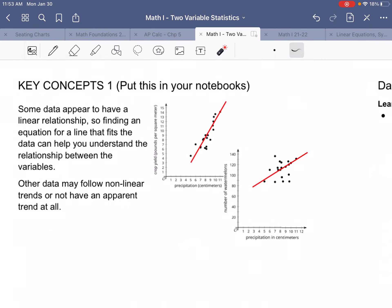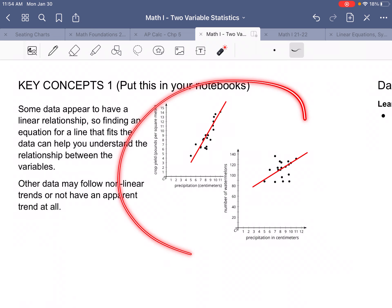So first of all, key concepts. Some data appear to have a linear relationship, and some does not. If we look at these two graphs over here, one of them looks like the dots are more in kind of a straight line than the other one. So this one right here looks like it would best be fit by a linear model. This one over here, the data's a little too scattered around. I can't necessarily say that that is a linear trend.